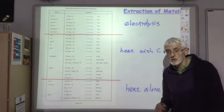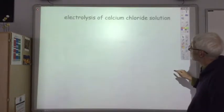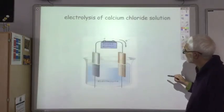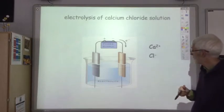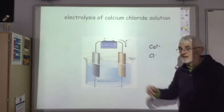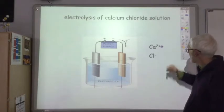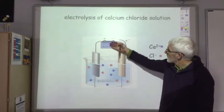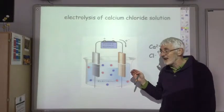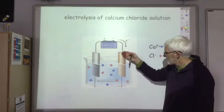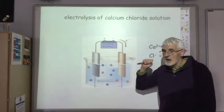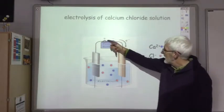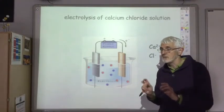Let's take a more detailed look at electrolysis, using the example of calcium chloride. Calcium chloride is soluble in water, so we have calcium ions and chloride ions floating around in the water. We put in two electrodes — normally graphite electrodes — connected to a DC power supply. DC means direct current, which means one electrode stays negative all the time and the other stays positive all the time, ensuring we only collect one product at each electrode.